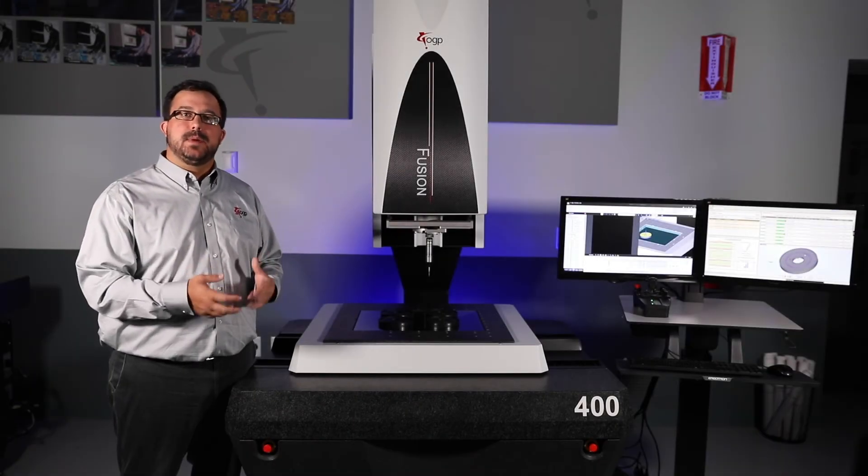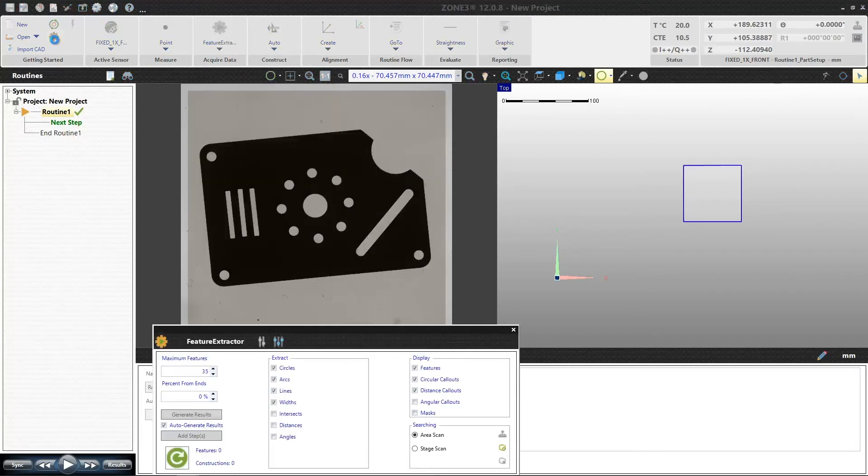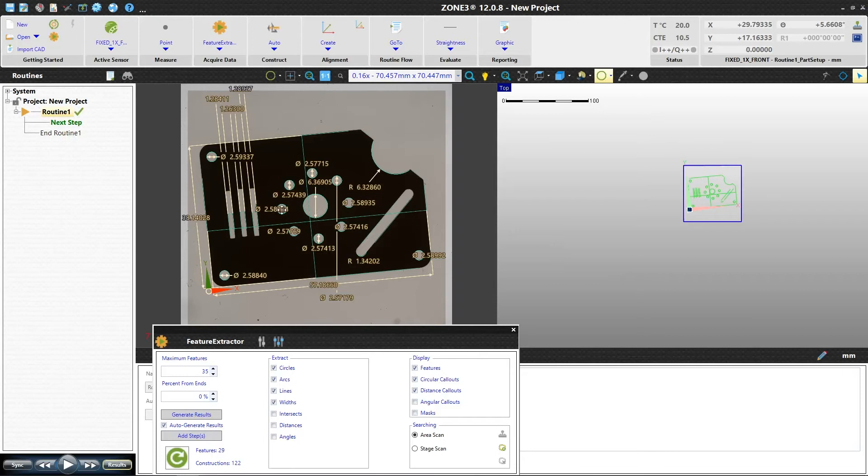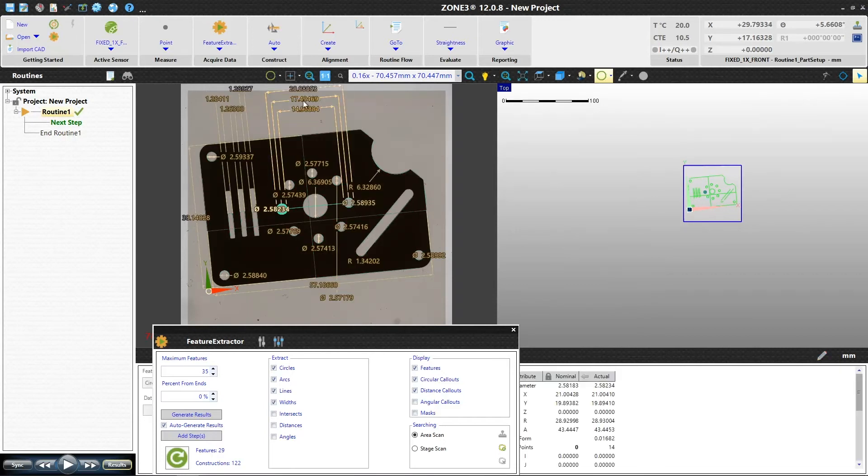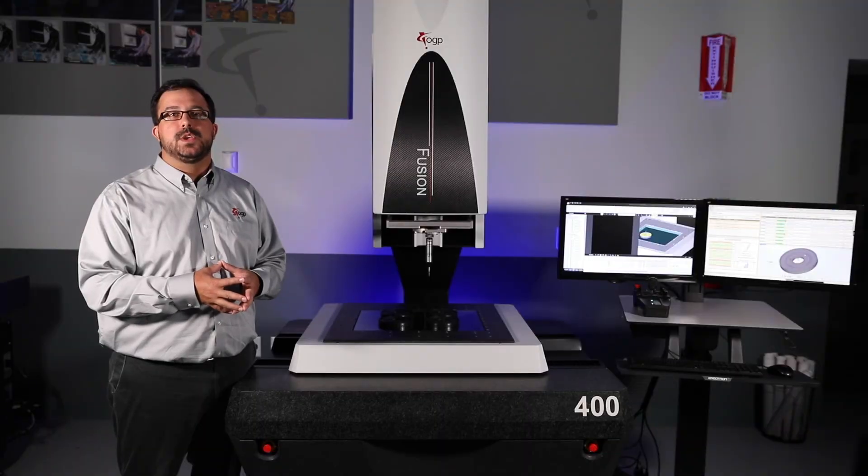Fusion systems are powered by Zone 3, which gives users the power of 3D and CAD based measurements with all sensors. Features like feature extractor, auto program, auto ID, and parallel processing make complex measurements really easy and minimize the need for a lot of advanced training for a user.